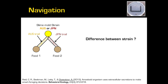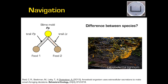We looked at whether slime mold can differentiate trails from different strains of the same species. Testing Australian versus Japanese strains, there was no preference — slime mold would pick randomly. But when we changed species, using a new species called Lepidoderma, we showed that Physarum would almost always pick the Lepidoderma trail. So it can differentiate between trails from different species and choose the trail of another species.